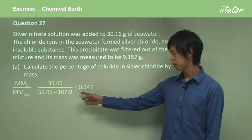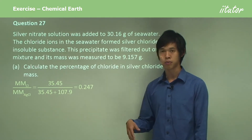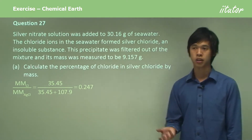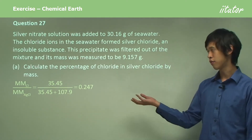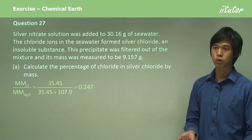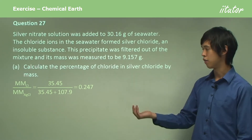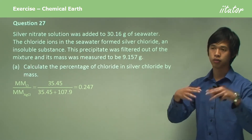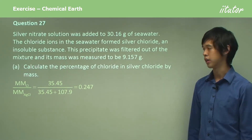If we do the calculation, the ratio is 0.247, so it's about 24.7% — or roughly one quarter — of the mass of silver chloride is chloride.